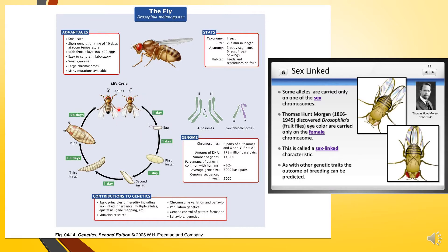The male and female Drosophila are very distinctively identifiable with the naked eye — males are usually smaller than females. As pea plants have contrasting characters, Drosophila also shows different contrasting characters. For example, in the normal wild condition Drosophila have red colored eyes, but due to mutation some have white colored eyes. In this way, transmission of characters from one generation to another can be studied easily. They complete their life cycle within 10 days, and because of these advantages Morgan utilized Drosophila in his laboratory.